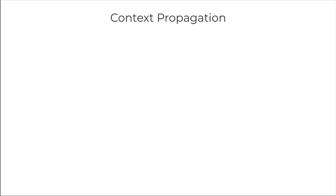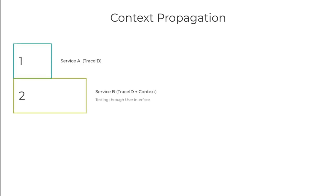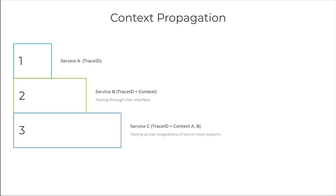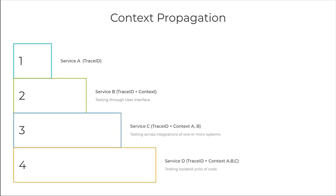Now let's take a look at context propagation. Context propagation involves passing context information — like trace IDs — across process and service boundaries, ensuring that the traces are connected across the entire transaction path in the distributed system. We'll dive much deeper into this in a later video.